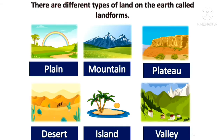There are different types of land on the earth called landforms. They are plain, mountain, plateau, desert, island, and valley.